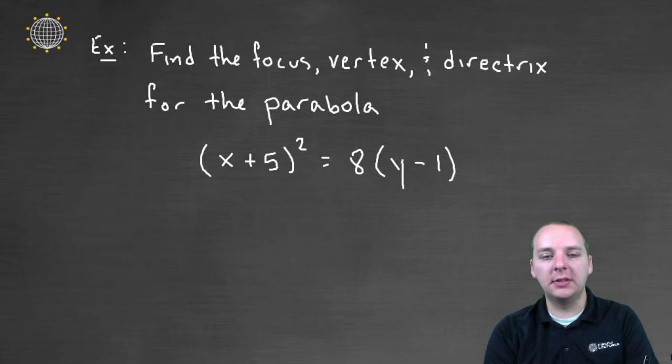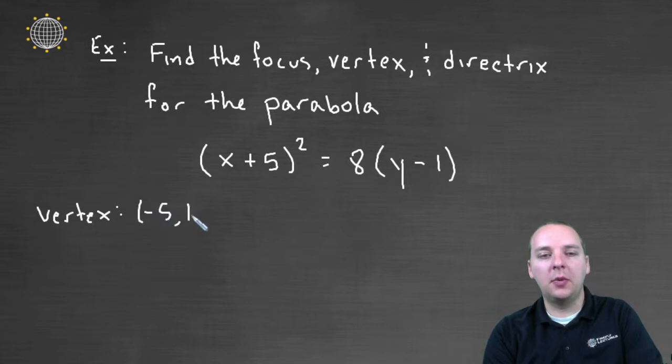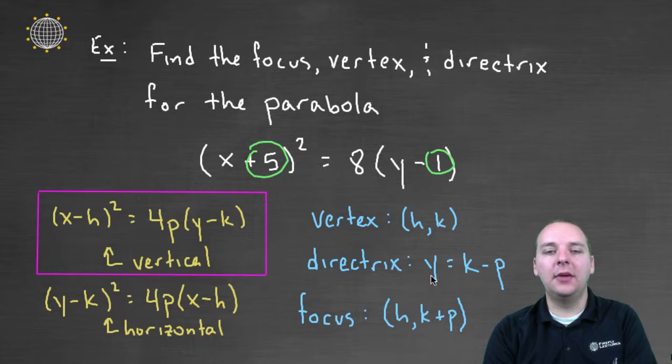Let's jot some of these things down. The vertex is at (-5, 1). All right, let's see, how about the directrix? Well, the k value is 1. Now, what's the value for p?